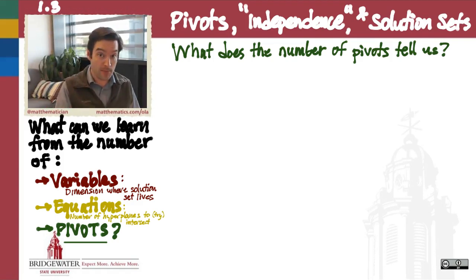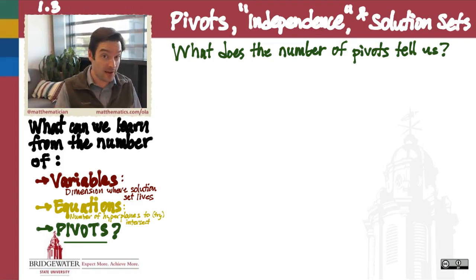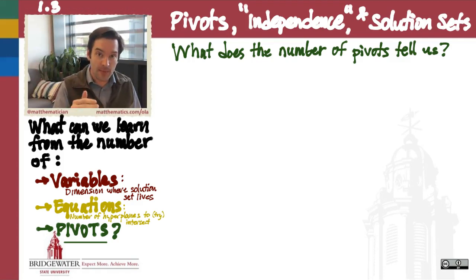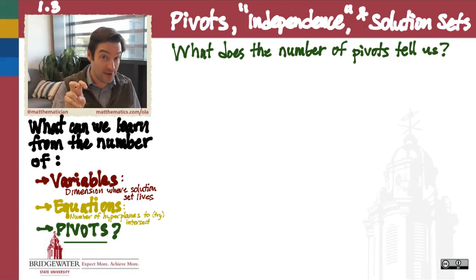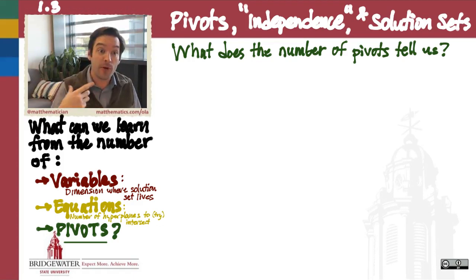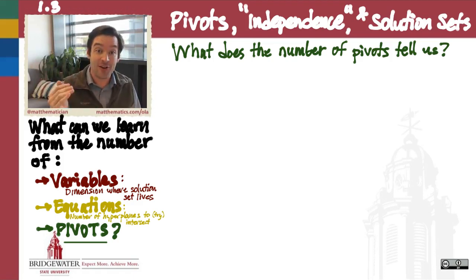Two variables means that my solution set is going to live in two-dimensional space, i.e. the xy-plane, and two equations means that I'm going to look for my solution set to be the intersection of two hyperplanes in two dimensions. And in two dimensions, hyperplane means a line. So this is the most familiar setting in which to do linear algebra, in the xy-plane, trying to find intersections of two lines.